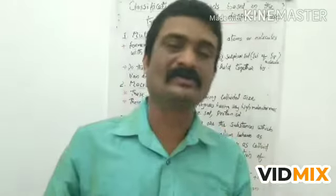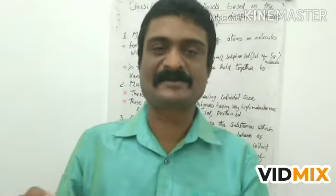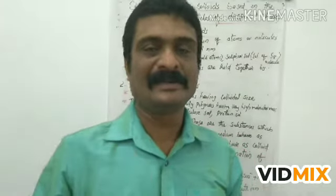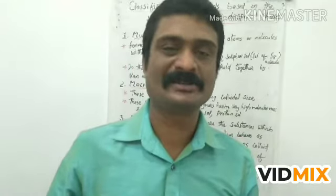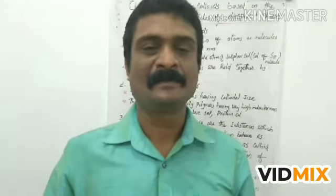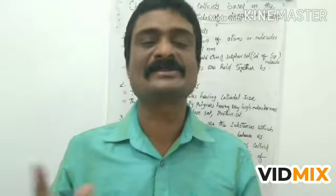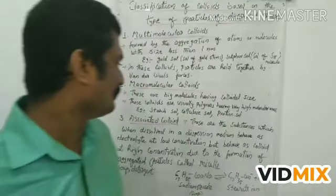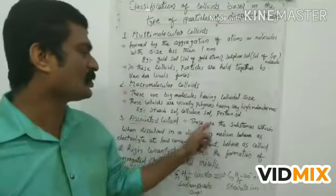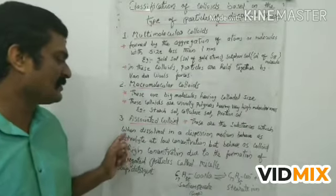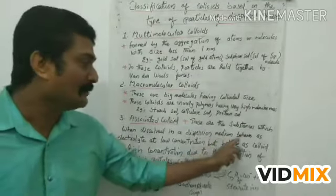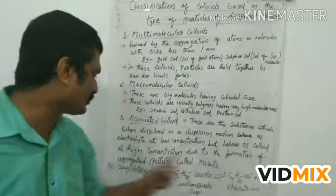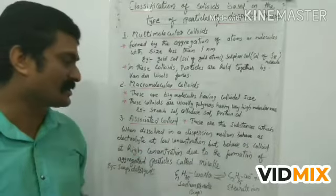The third type is associated colloids. When we dissolve certain substances in a dispersion medium like water, they behave as a normal electrolyte at low concentration but behave as colloids at high concentration. Associated colloids are substances which, when dissolved in a dispersion medium, behave as electrolytes at low concentration but as colloids at high concentration.